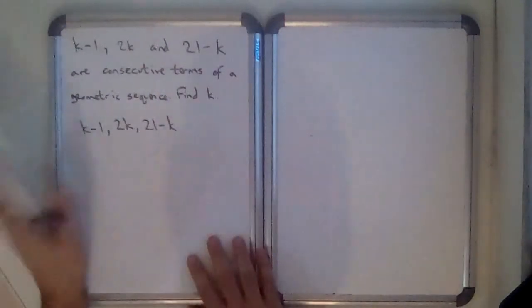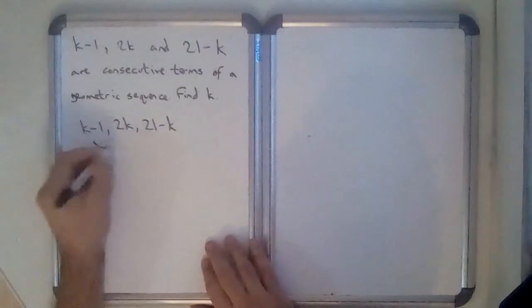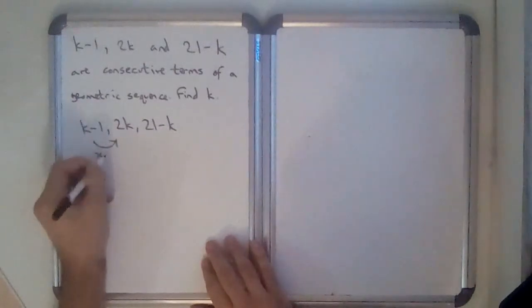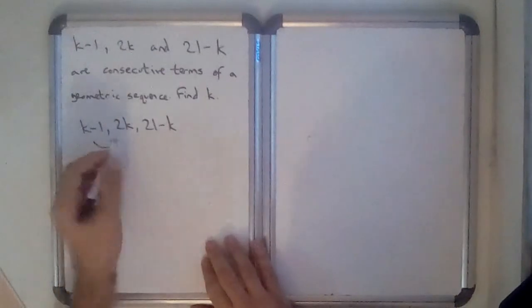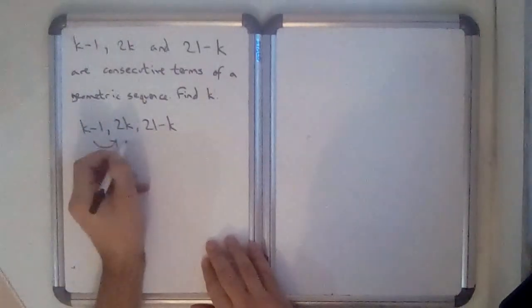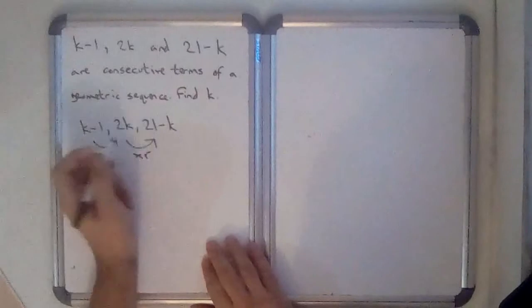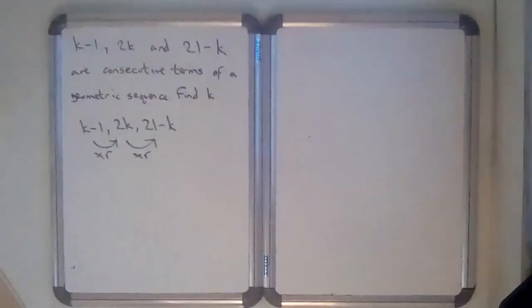If they are consecutive terms of a geometric sequence, then that means if I take this term and times it by r, the common ratio, it will turn it into that term. And if I take this term, the 2k, and times it by r, that will also equal the next term, 21 minus k.